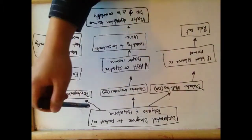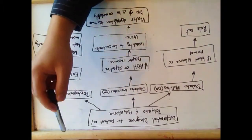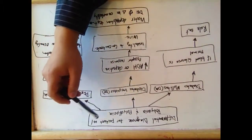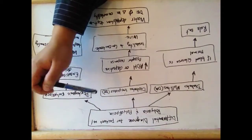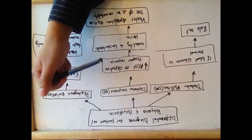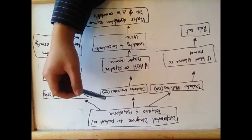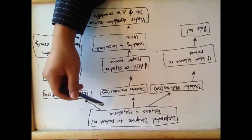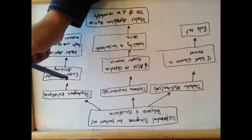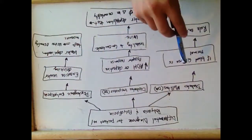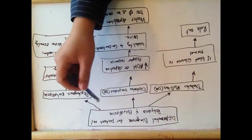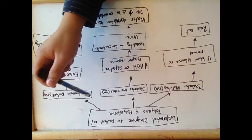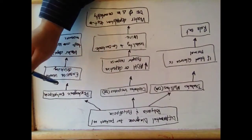The differential diagnosis for patients with polyuria and polydipsia — increased urination and increased drinking — are diabetes mellitus, diabetes insipidus, and psychogenic polydipsia.